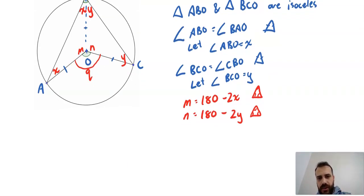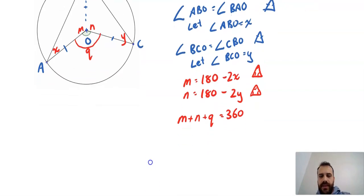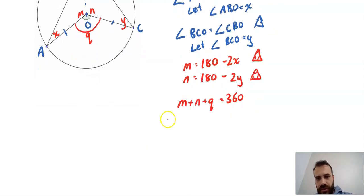I have M plus N plus Q equals 360. I can substitute: M is 180 minus 2X, N is 180 minus 2Y, so 180 minus 2X plus 180 minus 2Y plus Q equals 360. I can move the 180s from this side of the equation to the other side. Note that M plus N plus Q equals 360 because there are 360 degrees in a circle.